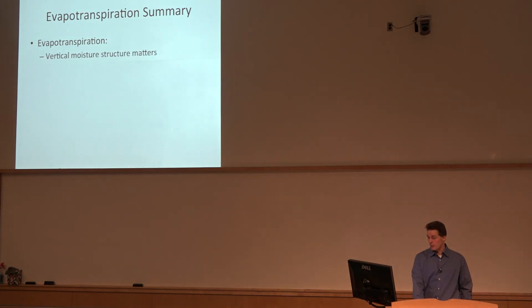So just summarizing that, the evapotranspiration, the vertical moisture structure matters, so does the structure of vertical mixing, which is related to the height and strength of the cap. We've got to keep the moisture in that shallow layer, and then do we have moisture sources regionally or locally where we have something to add moisture to the boundary layer during the day when the crops are active.